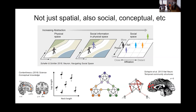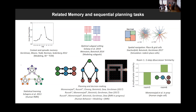This means many of our capacities might rely on similar underlying representations — the ability to extract graph-like representations of relational structures. Here is another slide of some of my colleagues' work related to ideas of memory and sequential planning tasks that rely on various kinds of navigation on graph-like structures.